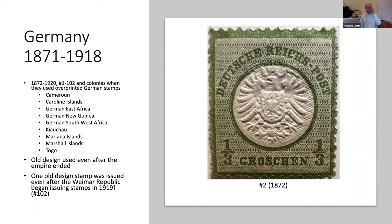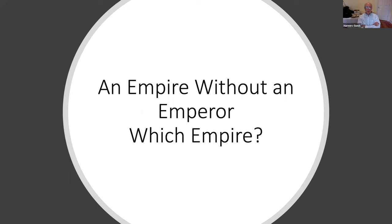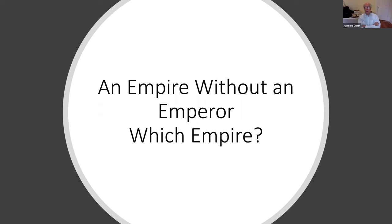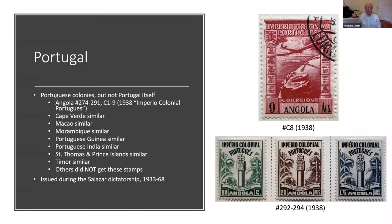How about an empire without an emperor? The answer would be Portugal. About eight or nine Portuguese colonies issued stamps in 1938 with the inscription 'Império Colonial Português' on them. Portugal itself — none of its stamps say this, only the colonies.